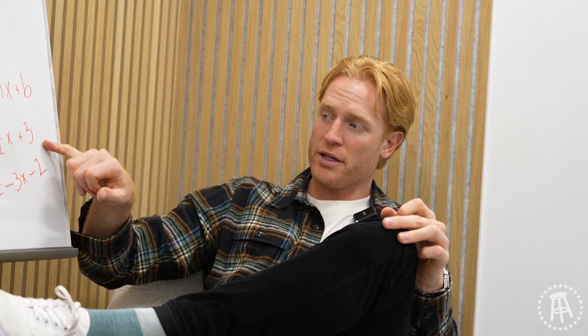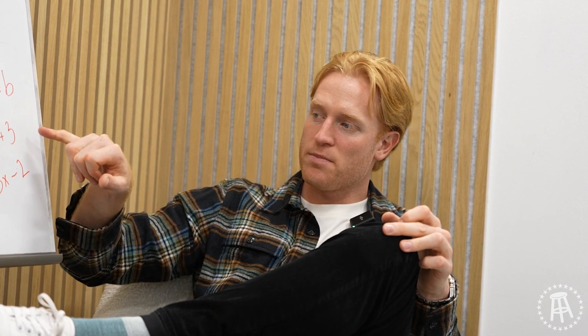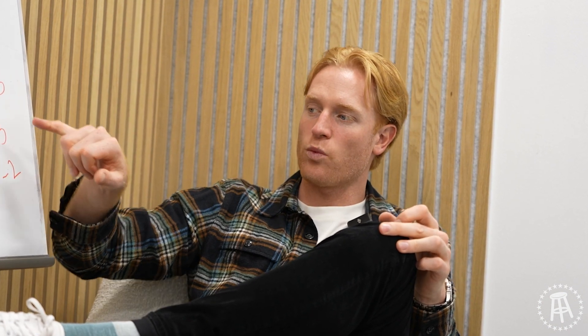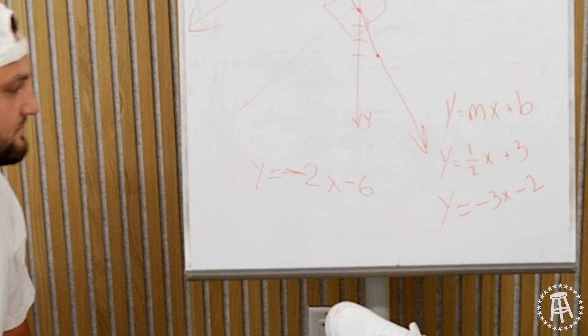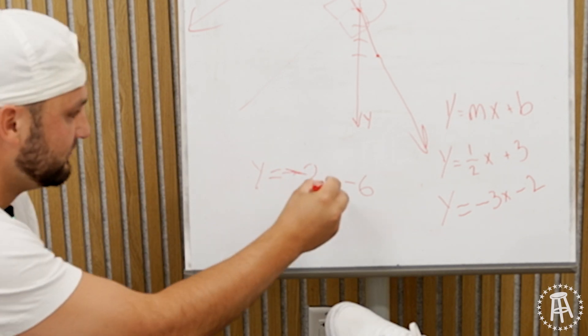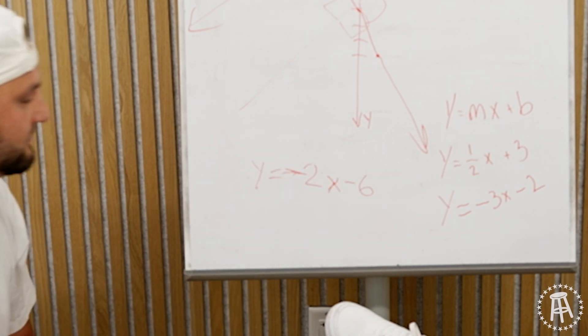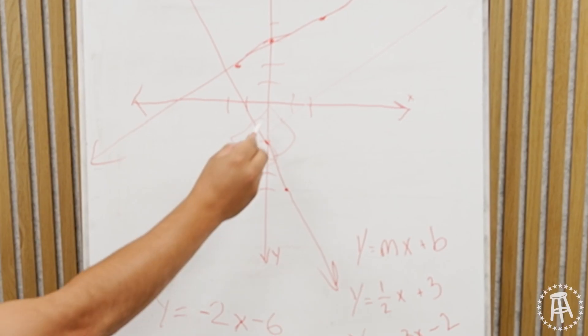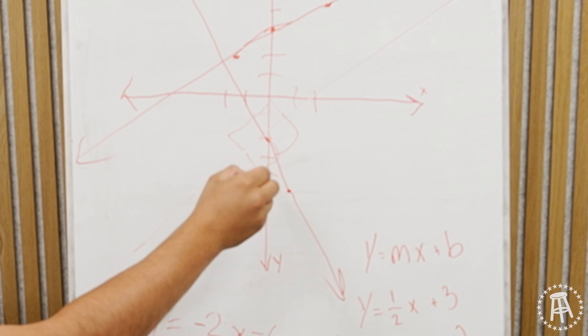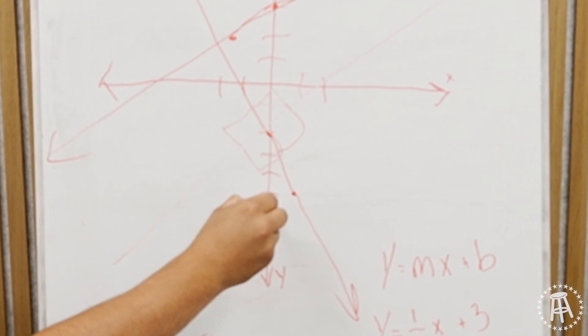I want a line that is perpendicular to y equals 1 half x plus 3, but I want it to have a y-intercept of negative 6. Negative 2. Y equals negative 2x minus 6. 1, 2, 3, 4, 5, 6. Bang.